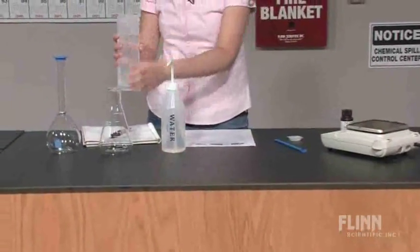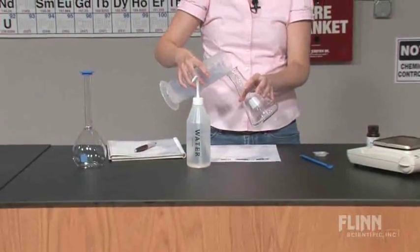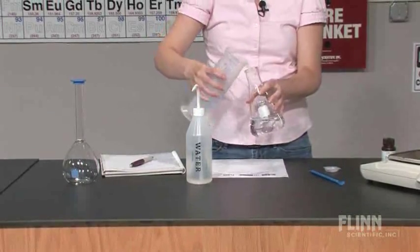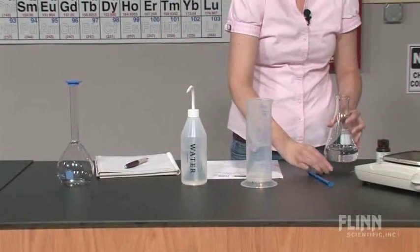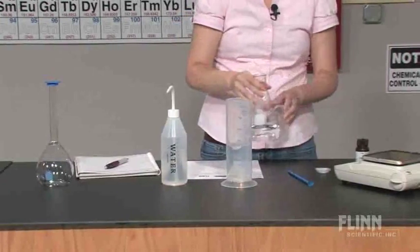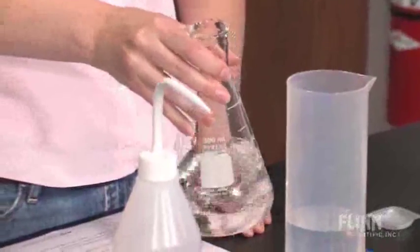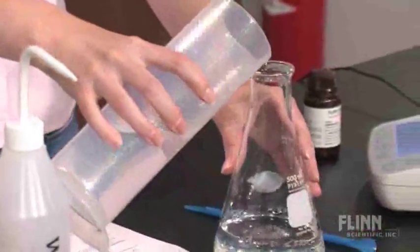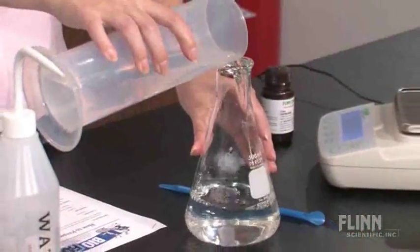Transfer approximately half of the measured volume of distilled or deionized water into the Erlenmeyer flask. Transfer the catalase to the Erlenmeyer flask and swirl to dissolve. Then add the remaining water from the graduated cylinder.